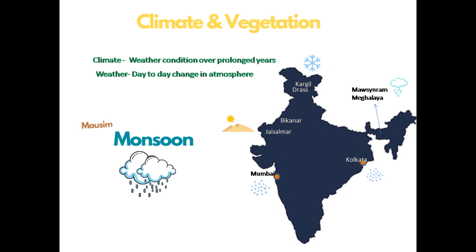Mawsynram, in the state of Meghalaya, receives the world's highest rainfall, whereas Jaisalmer never receives rainfall at all in a year. The climate of India is of the monsoon type. The term 'monsoon' is taken from the Arabic word 'mawsim', meaning season. As India is in the tropical region, rainfall is often brought by monsoon winds, otherwise known as seasonal winds.